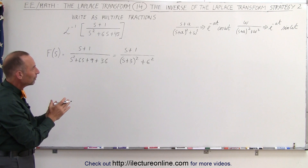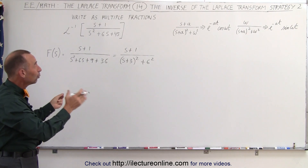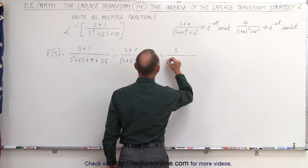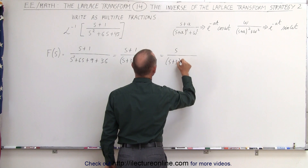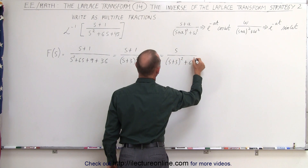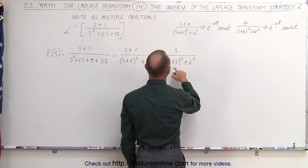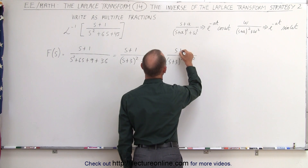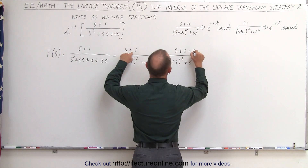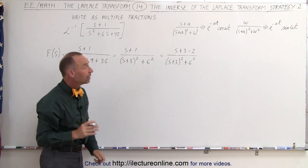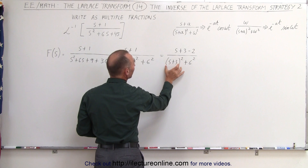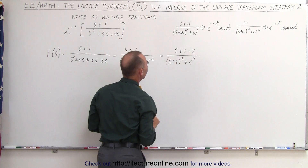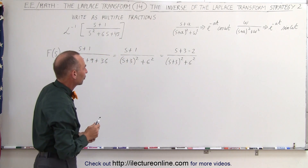Now you can see that the numerator can be split into 2: S and 1, right over the same common denominator. So this can now be written as S divided by S plus 3 squared plus 6 squared. We also need an S plus 3, so how about writing it like S plus 3 minus 2? What I want here is an S plus 3 so I can make it look like that, and then I can separate it from the minus 2. So before I separate the two fractions, I want to do that first.